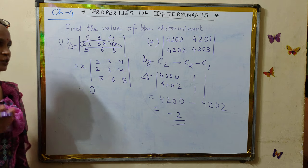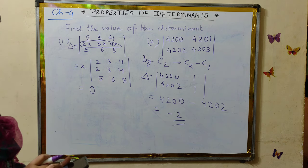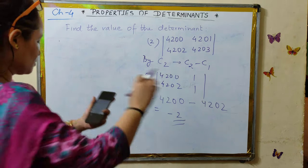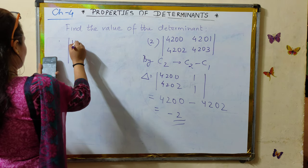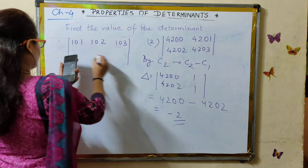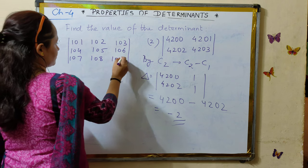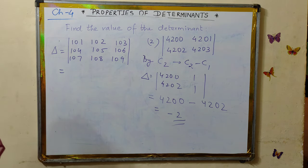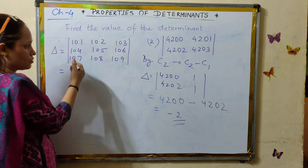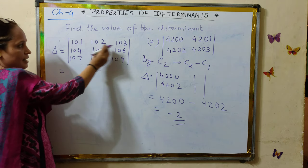Let's do more questions on the properties of determinants. There is one more assignment question — a determinant containing three-digit numbers: 101, 102, 103, 104, 105, 106, 109. To evaluate this determinant, we can use the properties. If you take the difference of any two rows or any two columns, the entries will become simpler than they were. All of them are currently three-digit numbers.